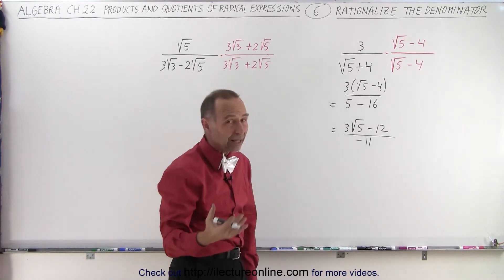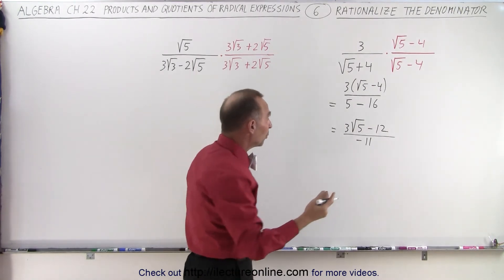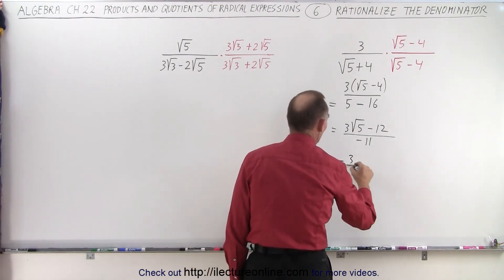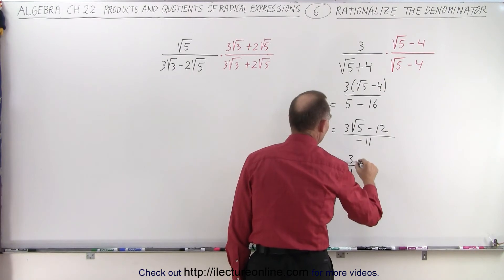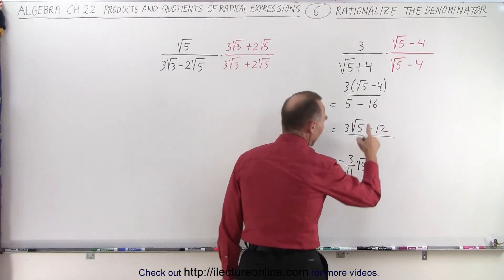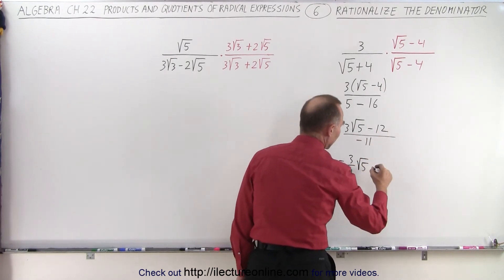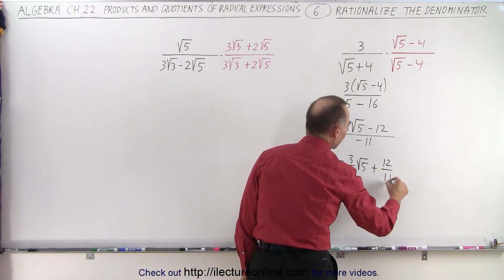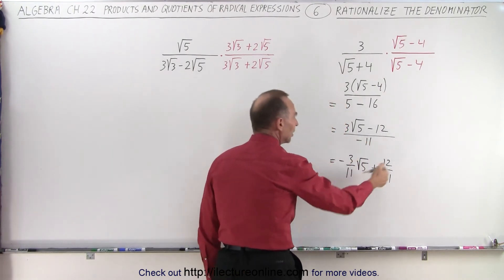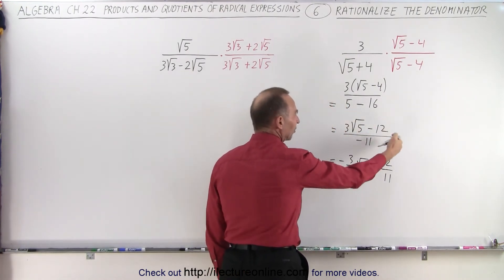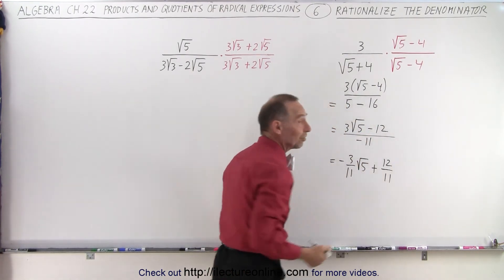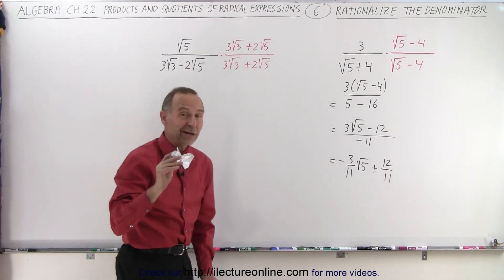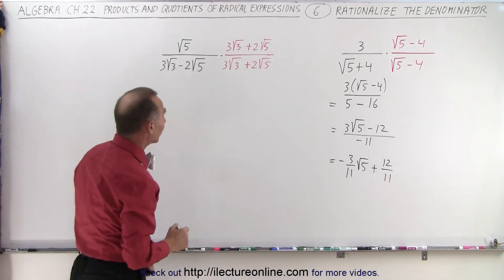We could leave it like that, or we could write it as follows: this is equal to negative 3 over 11 times the square root of 5, plus 12 over 11. So we could either write it as one expression or the other as the final answer. Either way, we got rid of that radical in the denominator.